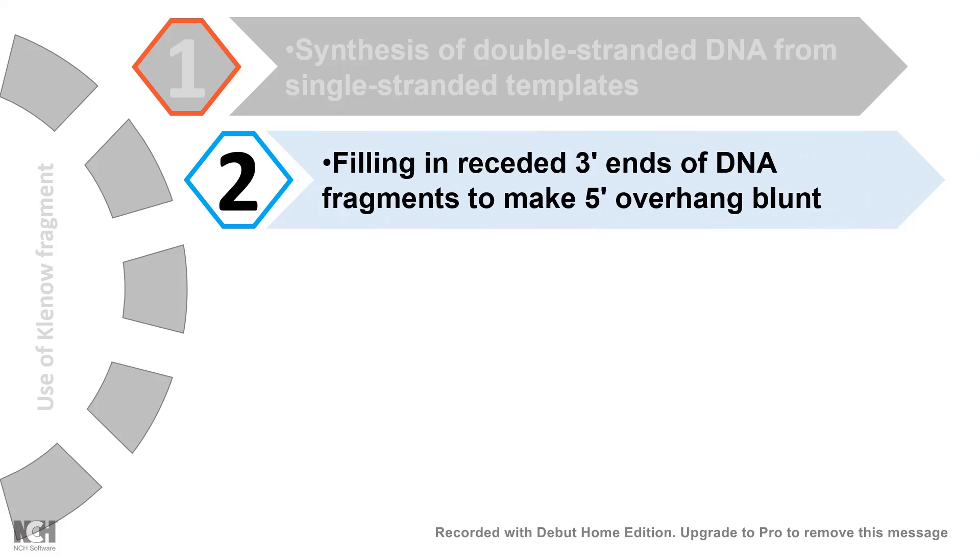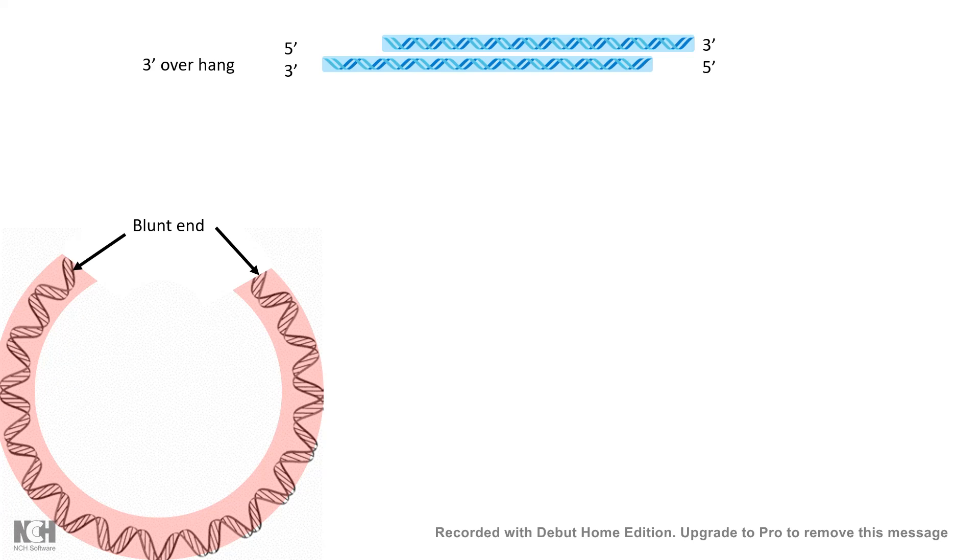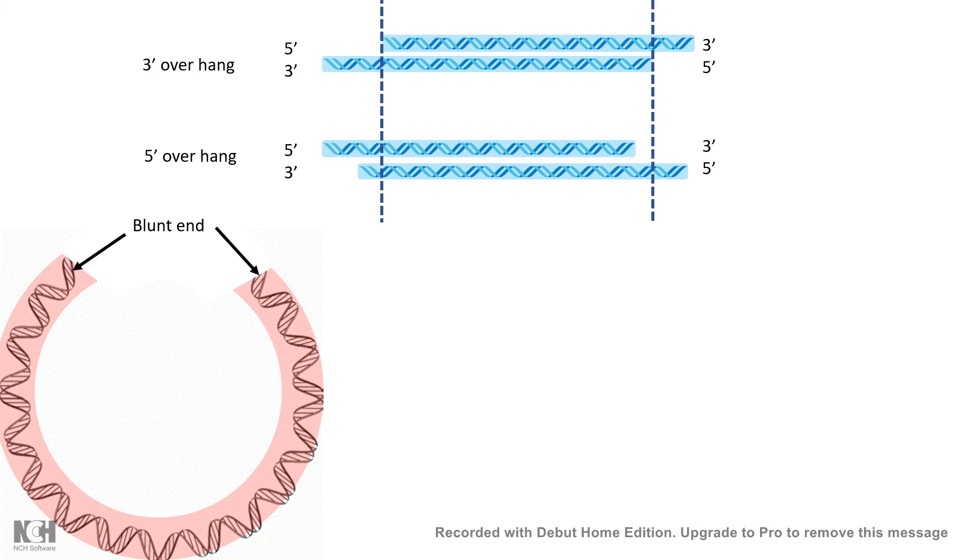After that, blunt end cloning is an important usage of Klenow fragment. So many of the cases, what happens is, we have our vector which is cut with a restriction enzyme which creates blunt ends, but our DNA of interest is cut with a restriction endonuclease which creates a sticky end and has 3' or 5' overhangs. But these are too incompatible to each other. In order for them to be cloned into this particular vector treated with blunt end, these inserts also need to be blunt somehow.